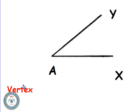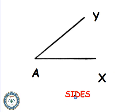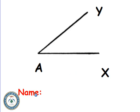Now let's talk about the elements of an angle. First, we have the vertex. The vertex is a point — it is the intersection point of the half lines AX and AY. Next, we have the sides. The sides are the two half lines AX and AY, which intersect at the vertex A.